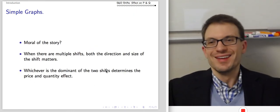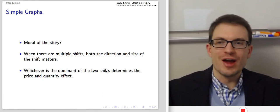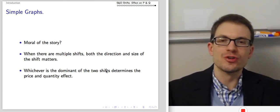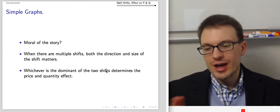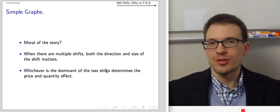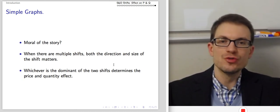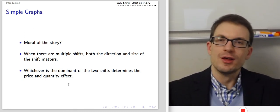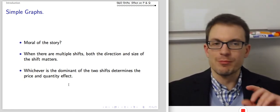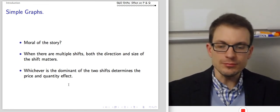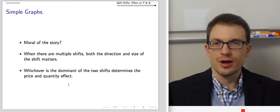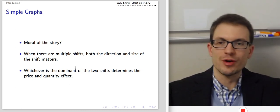So what's the moral of the story? When there are multiple shifts, both the direction and the size of the shift matter in terms of what happens to price and quantity. We can draw two pictures, alternating which side of the market — supplier or demand — gets the big shift and the little shift, then read what happens to the equilibria. Whichever is the dominant of the two shifts determines the price and quantity outcome, moving from an indeterminate or ambiguous effect toward a stronger effect one way or the other.